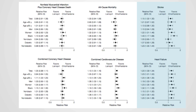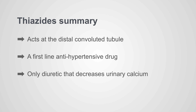Chlorthalidone versus lisinopril also showed an advantage for heart failure and, in addition, showed an advantage for stroke. On the basis of this subgroup analysis looking at heart failure and stroke, chlorthalidone was declared the winner of ALLHAT. In summary, thiazides act at the distal convoluted tubule, they are a first-line antihypertensive drug though there are regional differences, and they are the only diuretic that decreases urinary calcium.